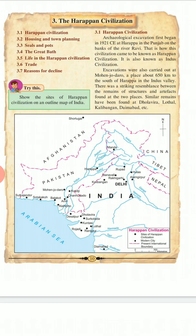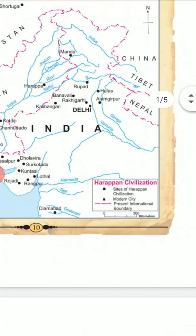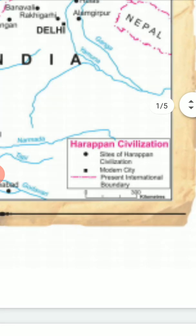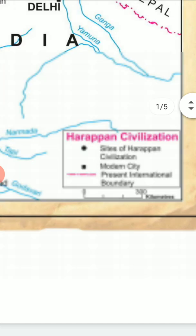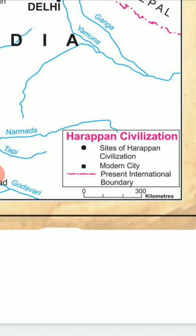You can see here the outline map of India where you can see the Harappan civilization sites. The first sign indicates sites of Harappan civilization, the square filled box indicates a modern city, and the dash symbol indicates present international boundaries.